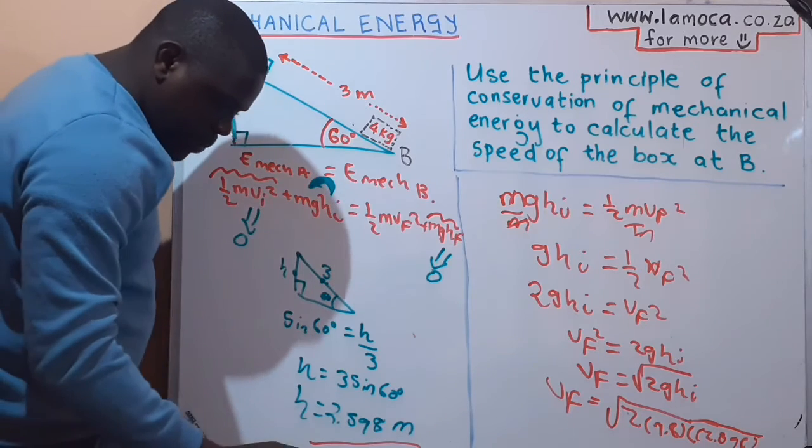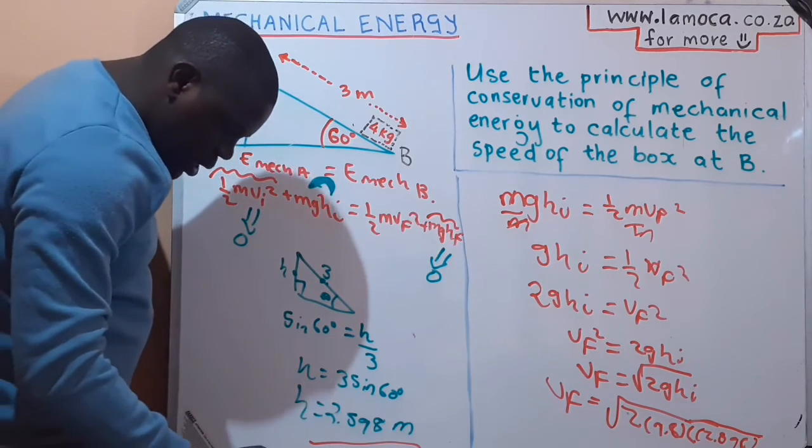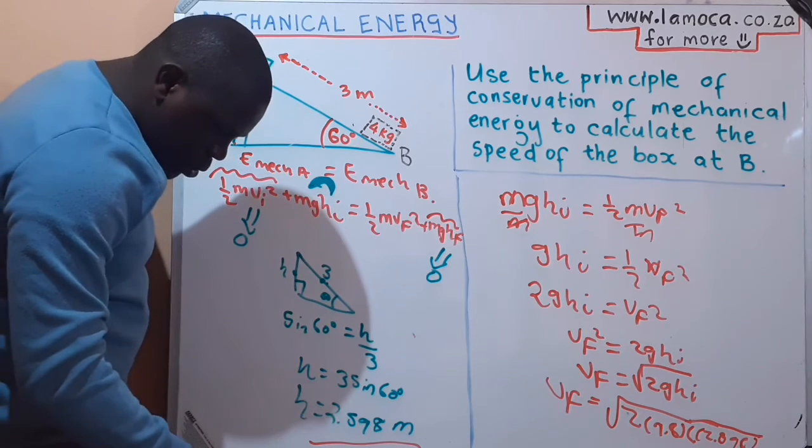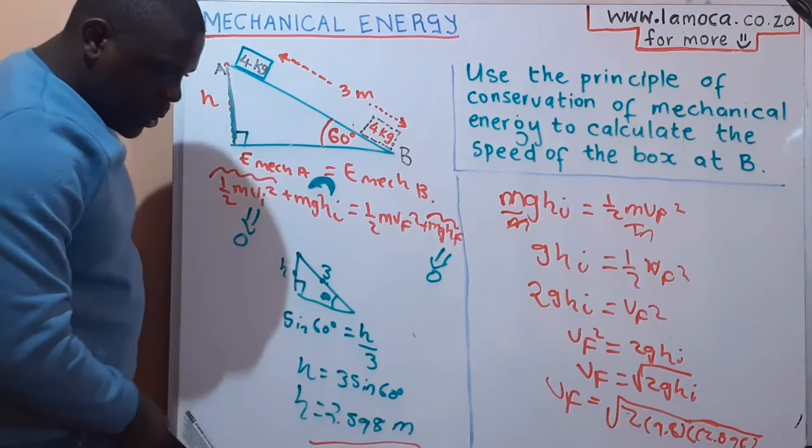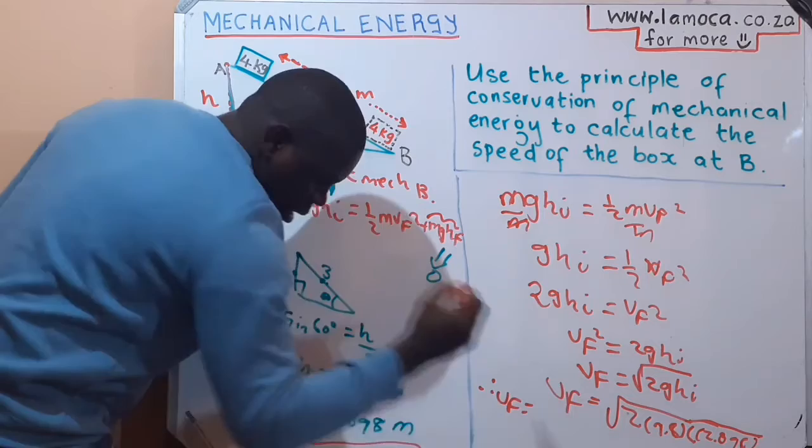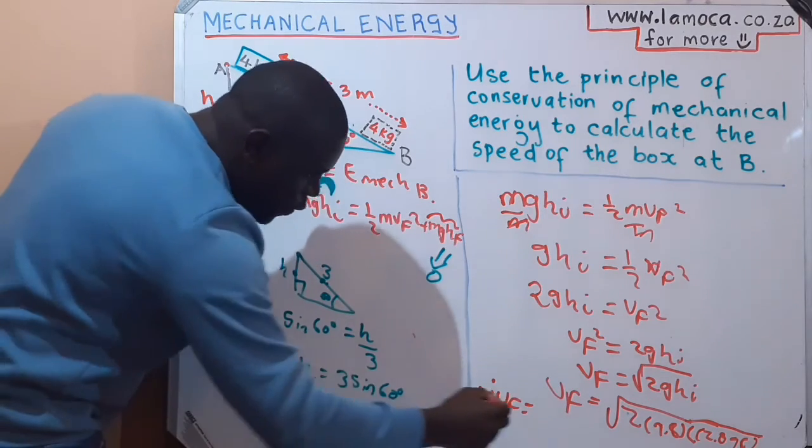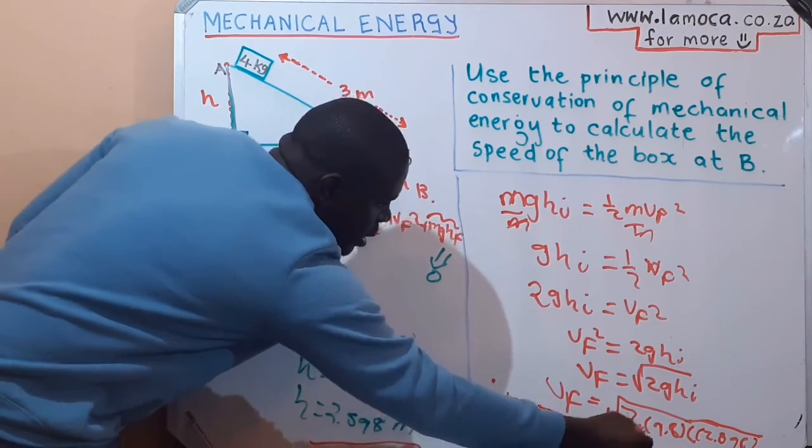So the square root of 2 × 9.8 × 2.598, we get the final velocity at point B to be 7.14 meters per second.